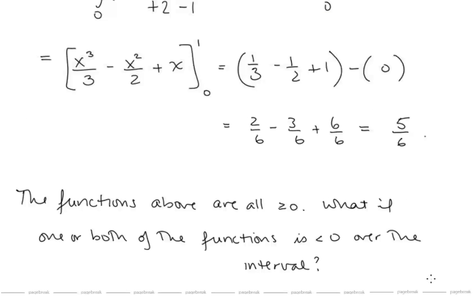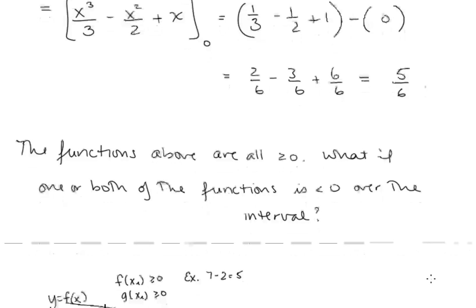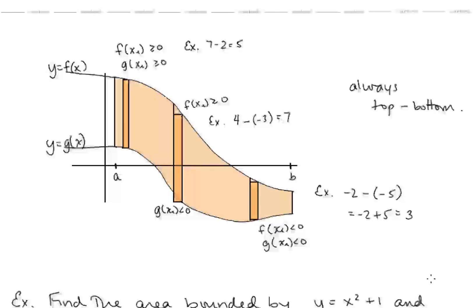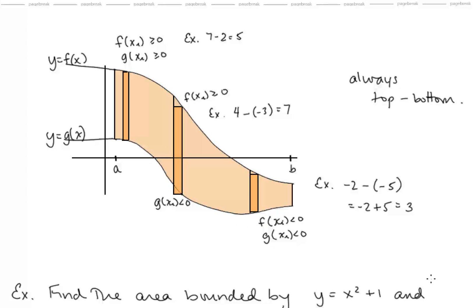Notice that the functions shown so far are all greater than or equal to zero. What if one or both of the functions is less than zero over the interval? Is it still top minus bottom to give us the shaded area? Actually it is. If the top value is, say, 7 and the bottom value is 2, then subtracting top minus bottom gives us 5 — that distance makes sense.